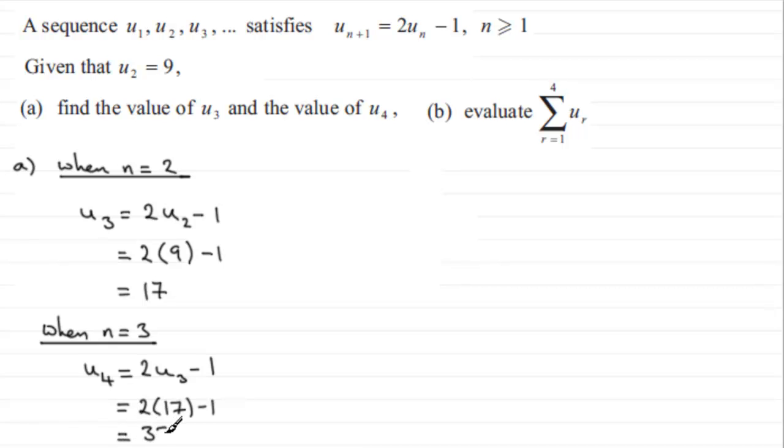So we've got the third term and the fourth term. Now when it comes on to part (b), we've got to work out the sum of the first four terms. So we'll start by putting sigma r going from 1 to 4 of u_r. So what that means then is when r is 1 you get u₁, then it's sigma which is the sum of, and then when r is 2 you get plus u₂, similarly when r is 3 you get u₃, and then when r is 4 you get u₄, so it's the sum of the first four terms.